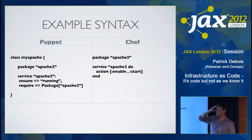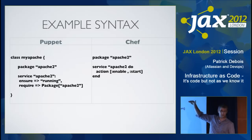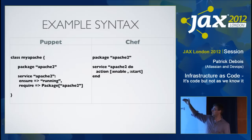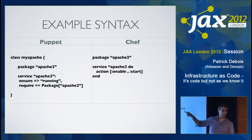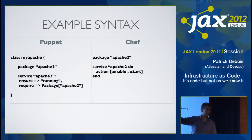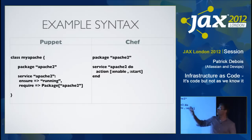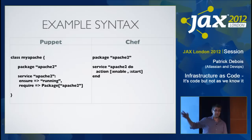The Chef syntax is more like — I would almost call it procedural. Package, Apache 2, and it's kind of more like a Ruby-like syntax. Puppet has its own DSL, its own language, its own directives. Chef allows you to mix in Ruby code immediately. So it's a kind of difference.